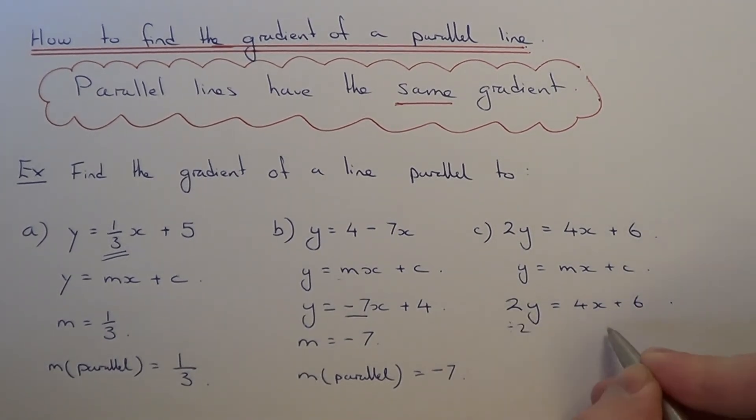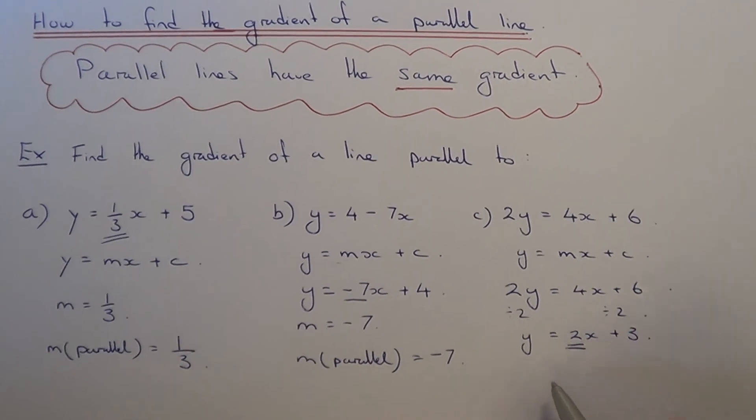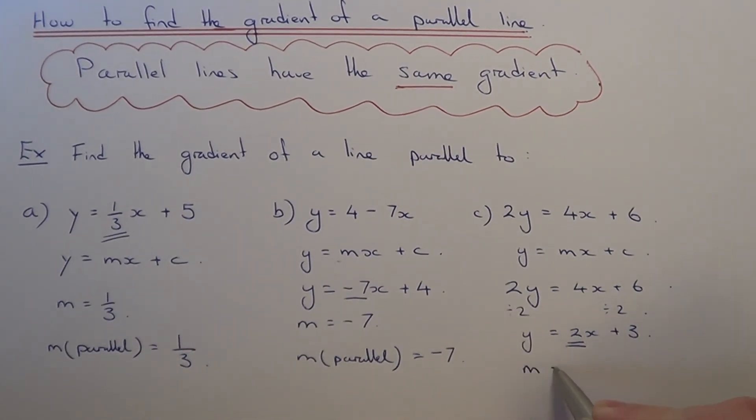If we divide both sides of our equation by 2, this will give us y equals 2x plus 3. The gradient of this line then is the number before x, which is 2. So the gradient of our parallel line will also be 2.